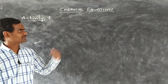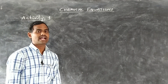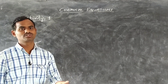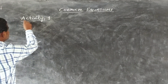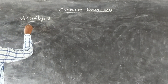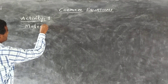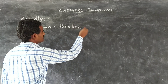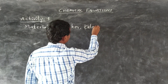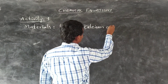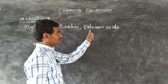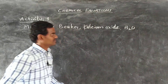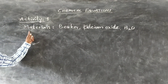We have seen some examples of chemical change. We will see some activities showing what changes take place and how reactions occur between reactants. We will see one activity. The materials required are: one beaker, calcium oxide — also known as quicklime — and water. These are the three materials required for this activity.